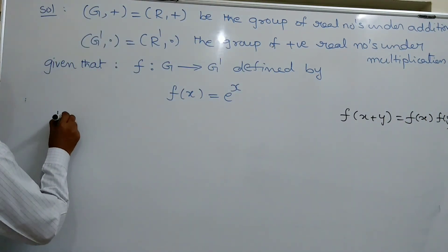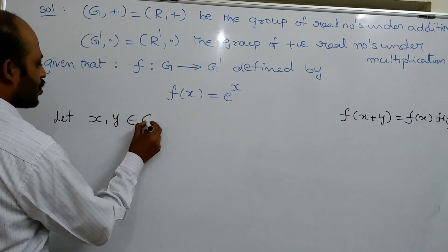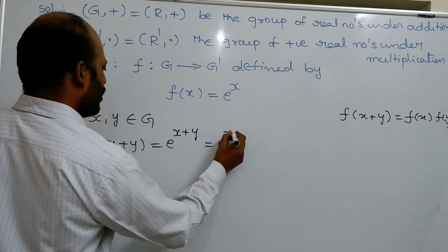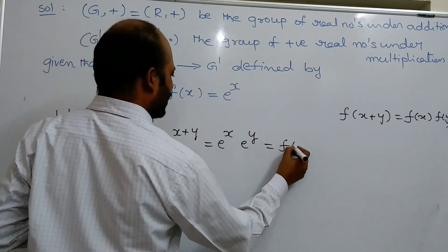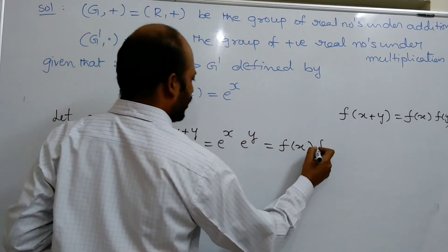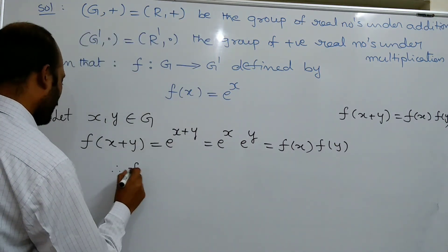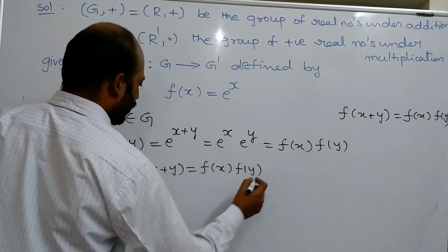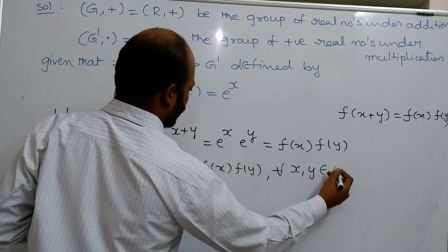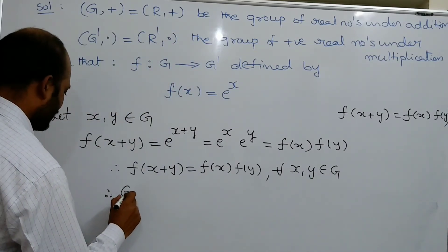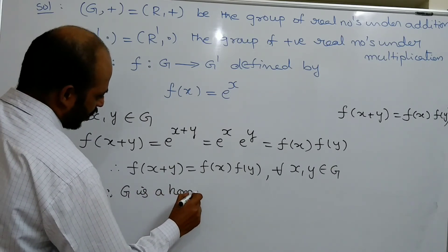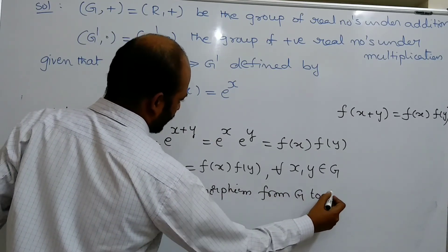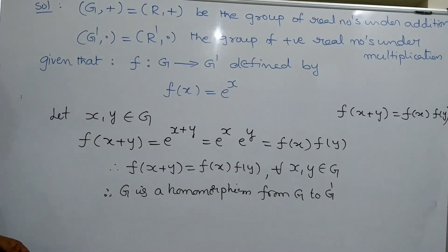Let x, y ∈ G. Then f(x + y) = e^(x+y) = eˣ · eʸ = f(x) · f(y). Therefore, f(x + y) = f(x)·f(y) for all x, y ∈ G. This shows that f is a homomorphism from G to G'.